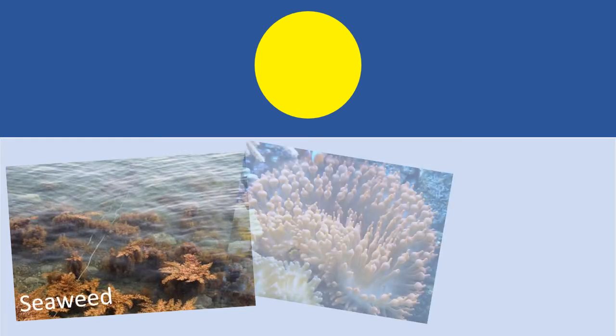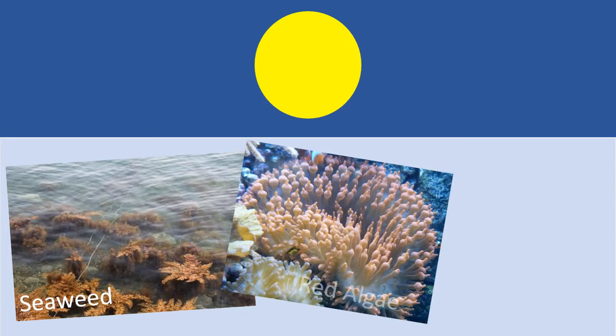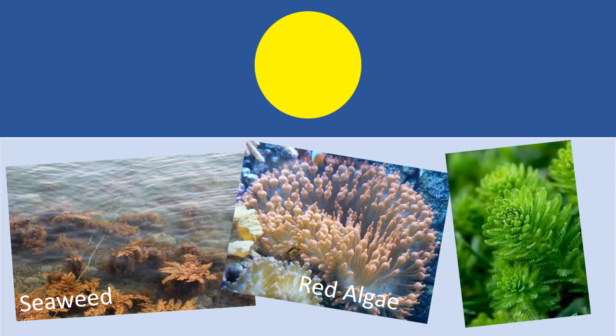The sunlight zone receives the most sunlight. This is vital as plants need the energy from the sun to grow. Most plants in the ocean can be found in the sunlight zone, including seaweed, red algae, and seagrass.